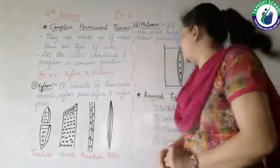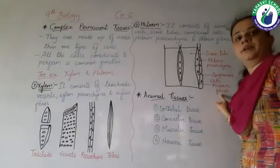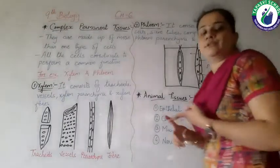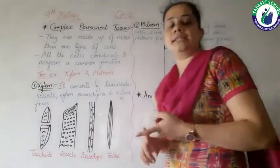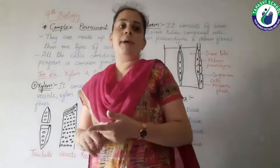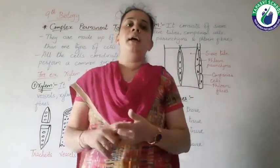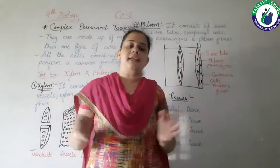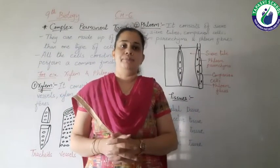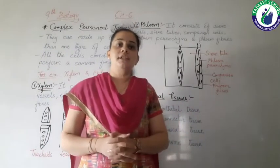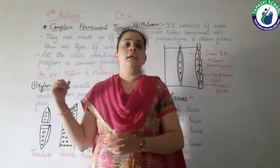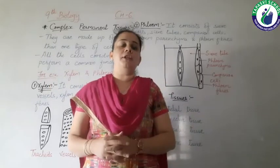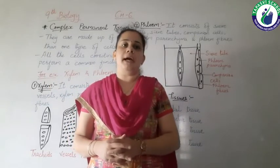Except the phloem fibers, all the cells — that is sieve cells, sieve tubes, phloem parenchyma and companion cells — are living. So this is all about the complex permanent tissues present in plants.